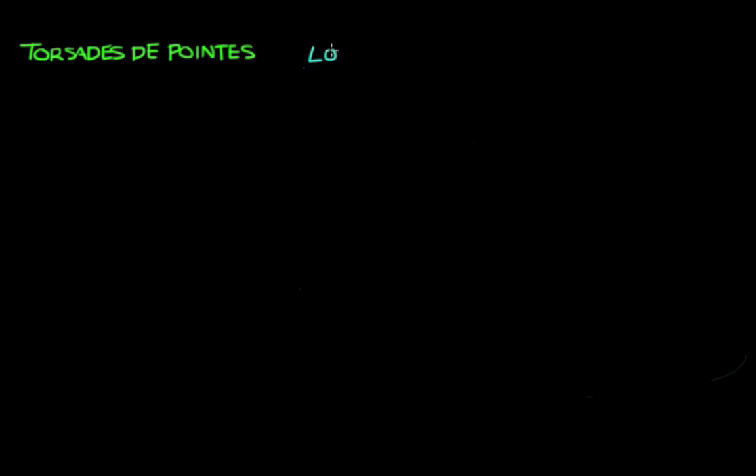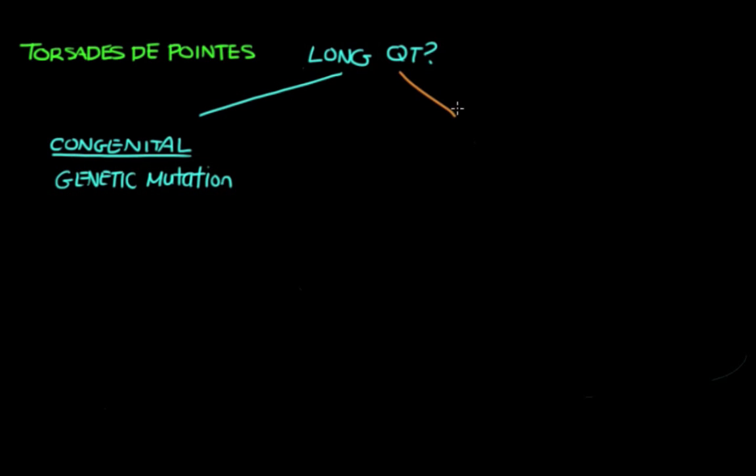Now, why would someone have a prolonged QT interval or a long QT syndrome? Well, a person can have a prolonged QT for a couple of reasons. There's congenital long QT syndrome, and congenital means that you're born with it. So these people are born with a genetic mutation where they have abnormal ion channels, and these abnormal ion channels will prolong their QT. There's also acquired long QT, meaning it comes from some sort of outside source. The most popular culprit for long QT? Well, that's medications. So different medications can make you more likely to develop long QT.